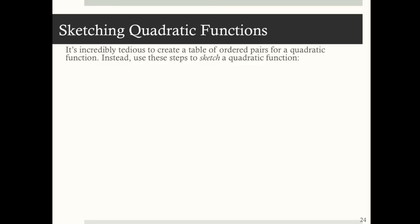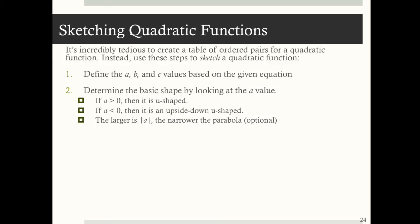So instead, follow these steps to sketch a quadratic function when you're given one. First, define or identify the a, b, and c values based on the given equation. Then we can use that a value to determine the basic shape. If a is positive, then we know that our parabola is u-shaped. If a is less than zero, we're going to have a parabola that's downward facing — it's an upside-down u. The larger the absolute value of a, the narrower the parabola is going to be.